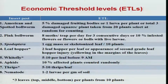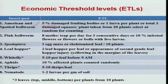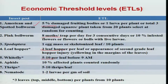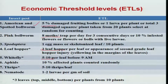These are the ETL levels for different pests. For American bollworm, 5 percent fruiting body damage or one larva per plant. For pink bollworm, 8 moths per trap per day for 3 consecutive days. For leafhopper, 2 leafhoppers per leaf. For whitefly, 5 to 10 per leaf before 9 am. For aphids, 10 percent affected plants. For thrips, 5 to 10. For nematode, 1 to 2 larvae per gram of soil.